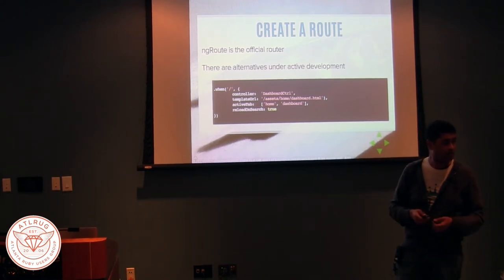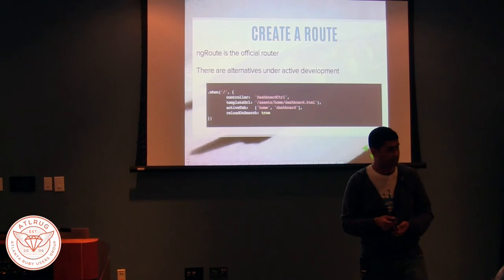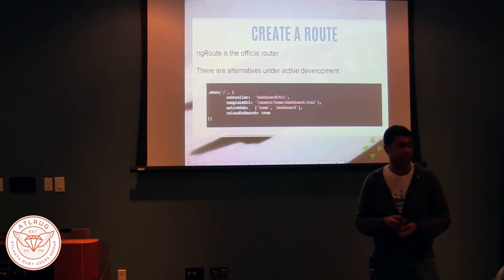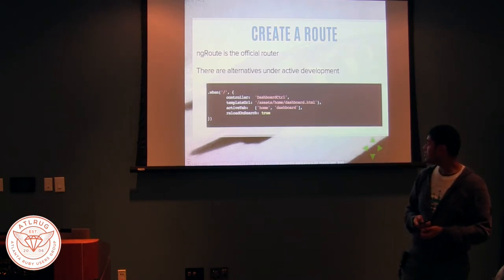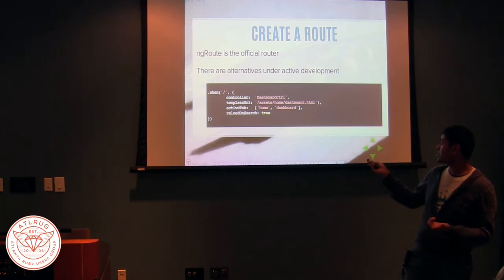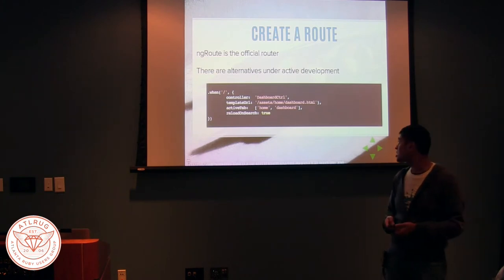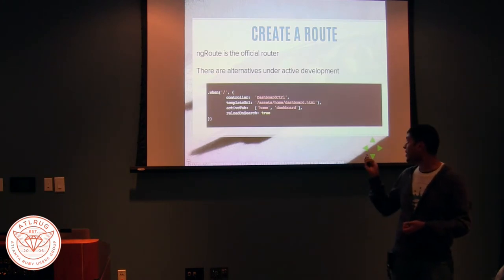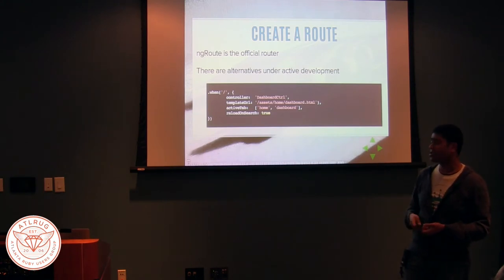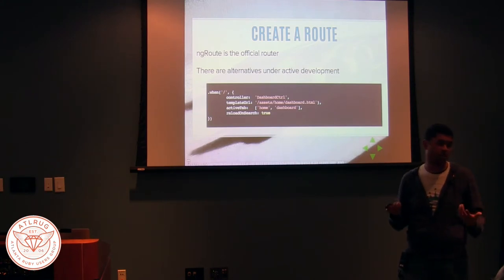There was a question about automagic routing — somewhat like resources in Ruby. With the default router, not really. The structure of the router is just JSON. You set this controller, you set the template URL — the template URL is some HTML you have cached. You set the active tab, and you set whether to reload the search if you change the search parameters.